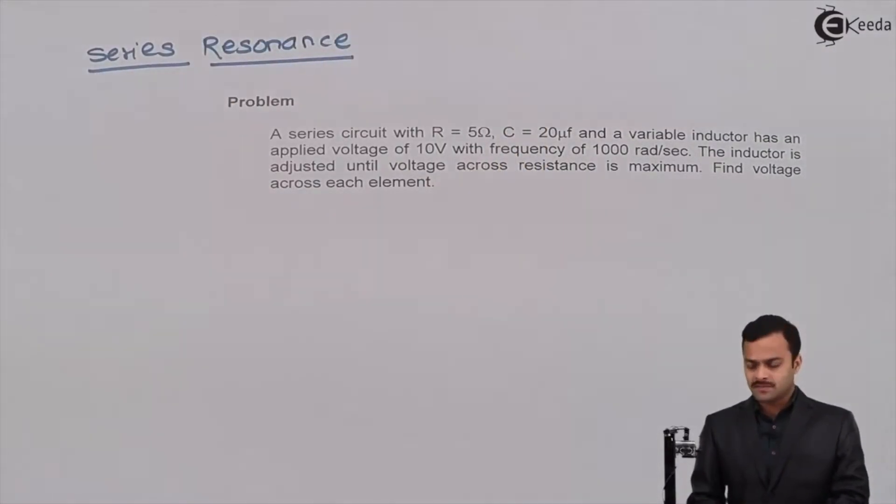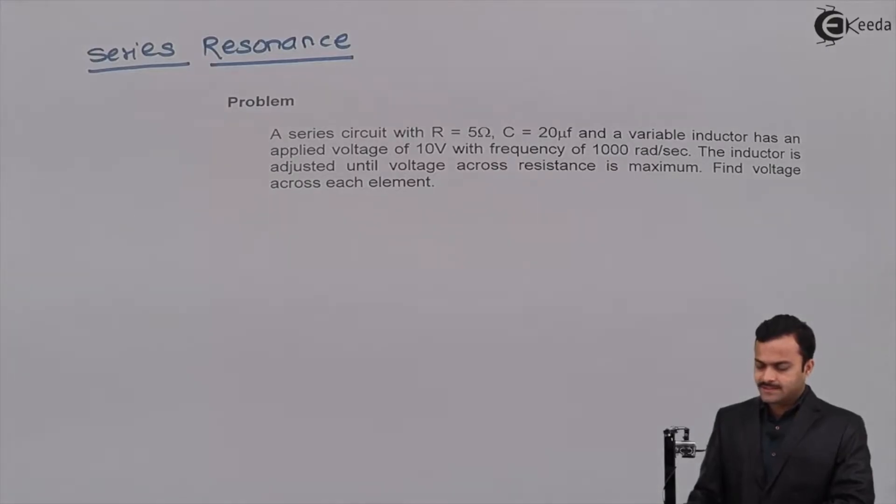The statement of problem is like this. A series circuit with R equal to 5 ohm, C equal to 20 microfarad and a variable inductor has an applied voltage of 10 volt with frequency of 1000 radian per second. The inductor is adjusted until voltage across resistance is maximum. Find voltage across each element.